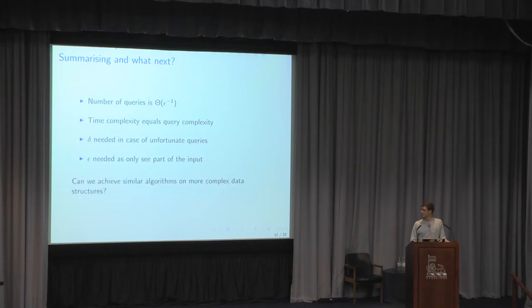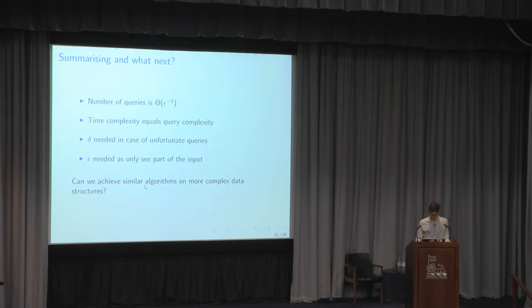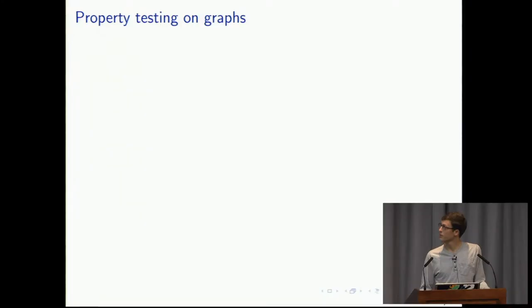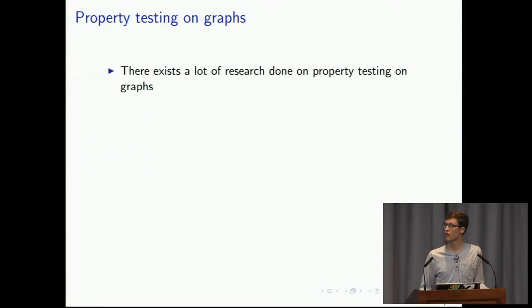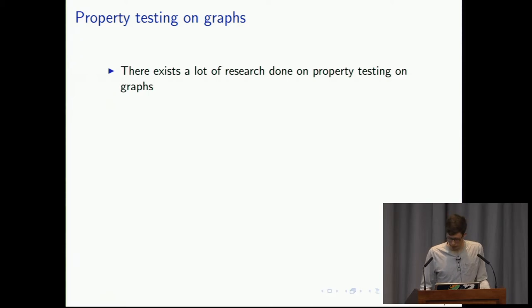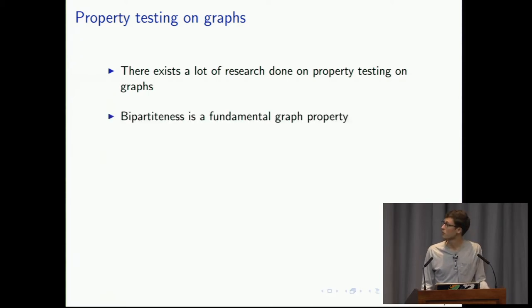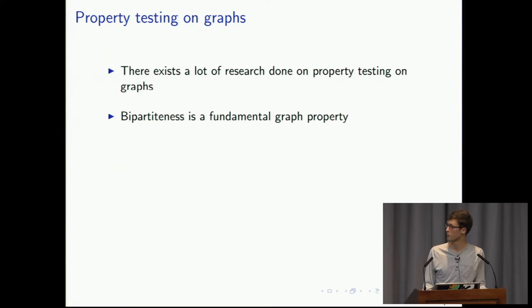The question now is: can we achieve similar algorithms on more complex data structures such as graphs? Yes, we can. Property testing on graphs has had a lot of research done on it. We're going to look at the fundamental property of bipartiteness and see if we can test whether a graph is bipartite.